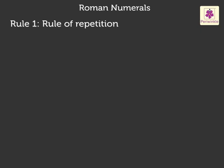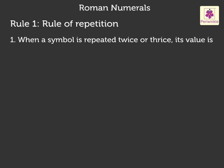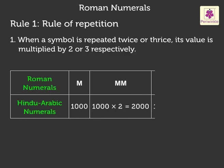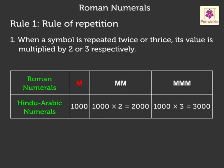Rule 1: Rule of repetition. When a symbol is repeated twice or thrice, its value is multiplied by two or three respectively. For example, M is equal to one thousand; MM is equal to one thousand multiplied by two, which is equal to two thousand; MMM is equal to one thousand multiplied by three, which is equal to three thousand.